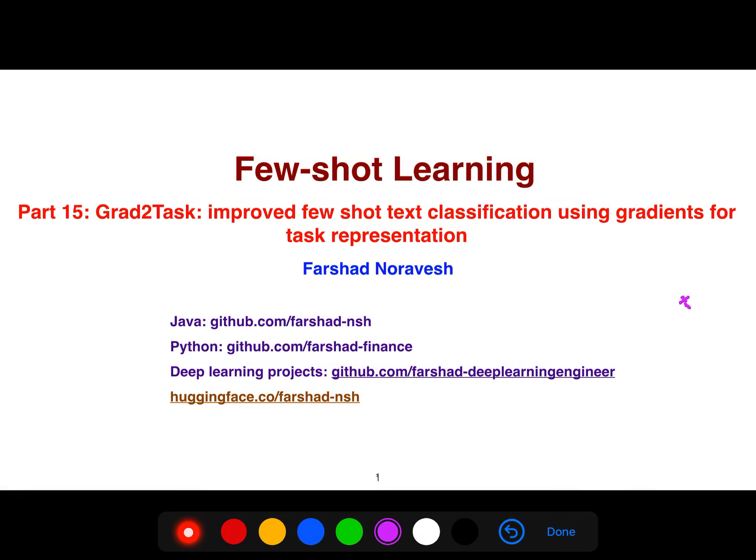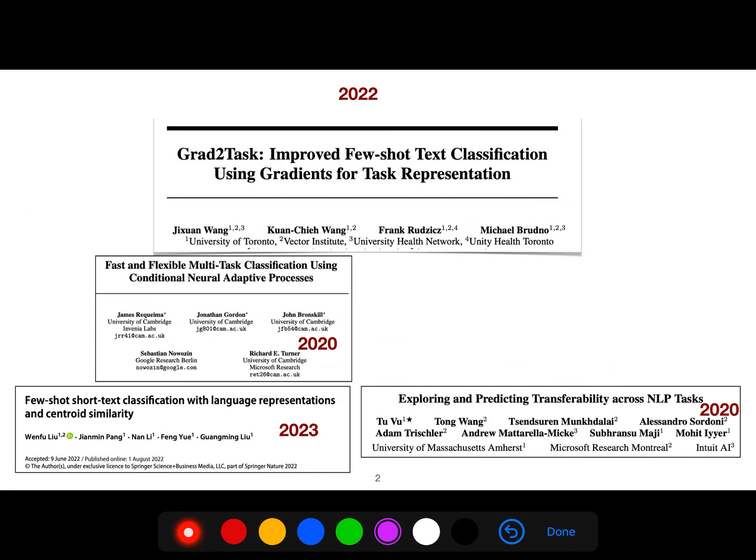All right, so this is an important paper which is improving few-shot classification using gradients for task representation. I'm going to be focusing on this paper from 2022 and these are very important positive samples.